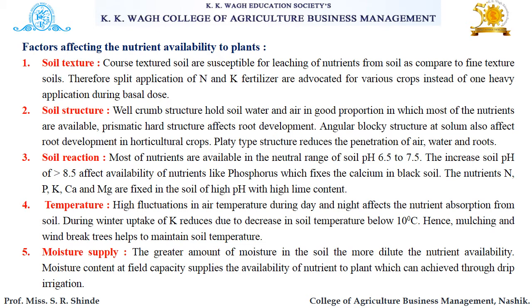The next factor affecting nutrient availability is soil reaction. Most nutrients are available in the neutral range of soil pH, that is about 6.5 to 7.5. An increase in soil pH above 8.5 affects the availability of nutrients like phosphorus, which becomes fixed with calcium in black soils. Nutrients like nitrogen, phosphorus, potassium, calcium, and magnesium are fixed in soils of high pH with high lime content.